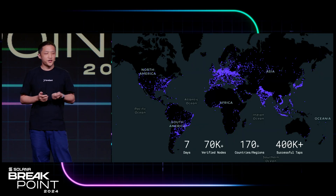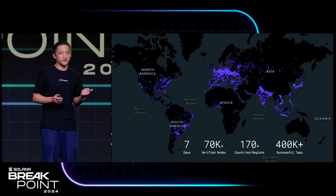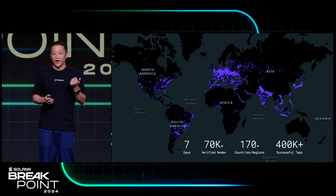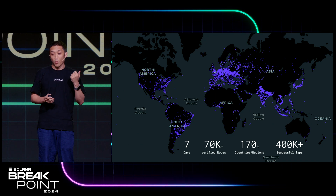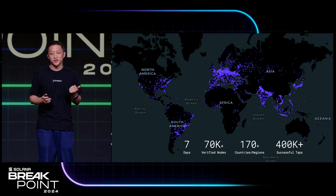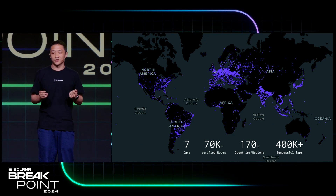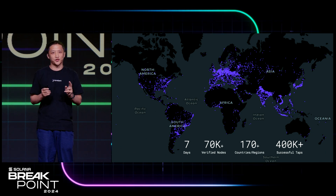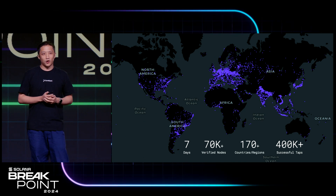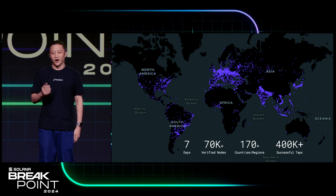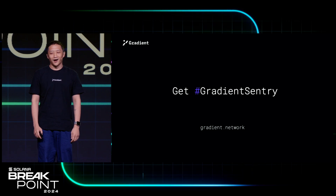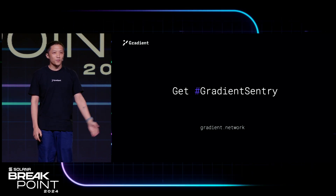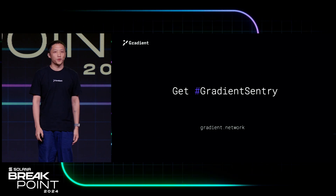Here is a snapshot of what we have achieved seven days after our launch. We have 17,000 verified nodes in more than 117 countries and regions, and we have already completed 400 tabs — that's peer-to-peer connections between nodes. Please feel free to try out the Gradient Sentry. All comments and suggestions are welcome. Thank you.